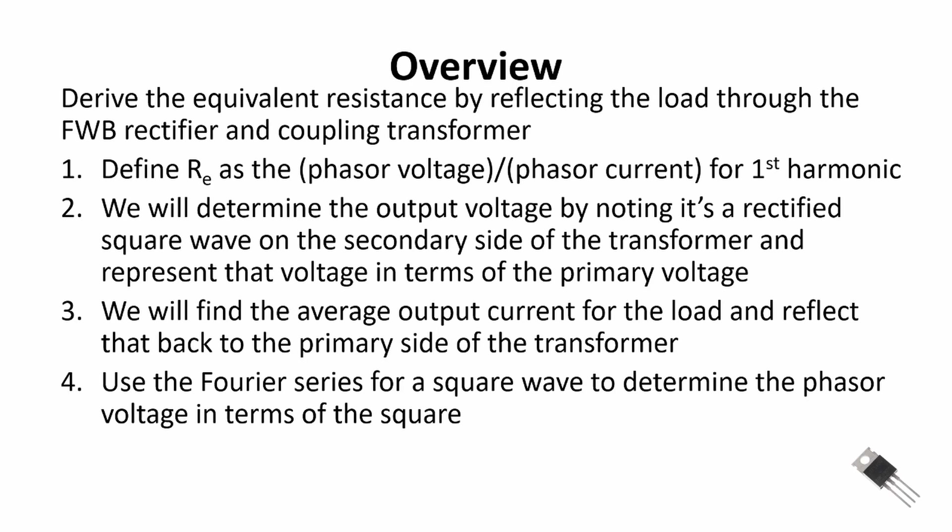The third step: we're going to find the average output current for the load, reflect that back to the primary side of the transformer, and use the fact that it is a full wave bridge sinusoidal type of wave to determine our average current. Finally, in the fourth step, we use the Fourier series for a square wave and determine the phasor voltage in terms of that square wave. Those are the four steps to derive the equivalent resistance.